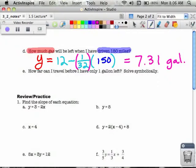Notice how this one says, how much gas will I have. So gas was the Y stuff. Miles were the X stuff. In part E it says, how far can you travel before there's only one gallon left? Now the one gallon left is talking about the very end. When you're finished, you're talking about one gallon.